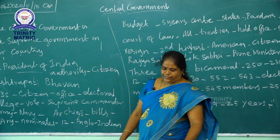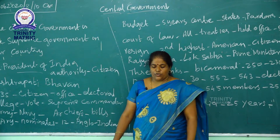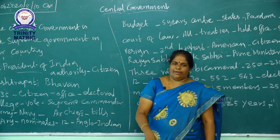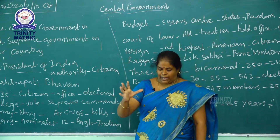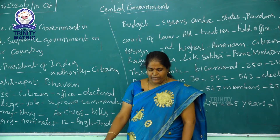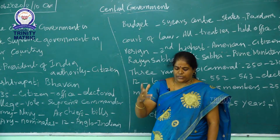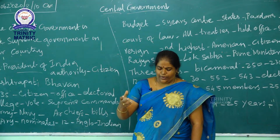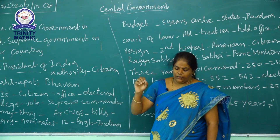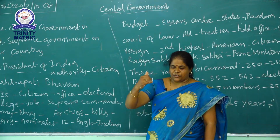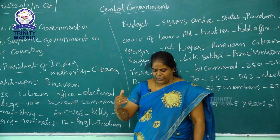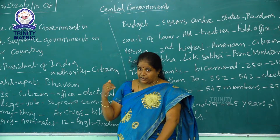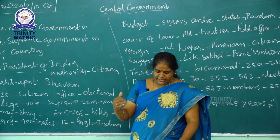The legislative is known as the Parliament, where laws are made. It consists of two houses — one is the upper house and the other is the lower house, otherwise known as Rajya Sabha and Lok Sabha. The President of India is also part of the Parliament.